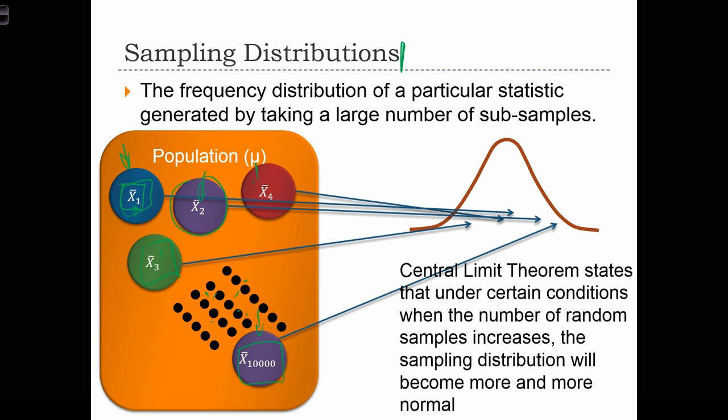The central limit theorem, a theory from mathematics, states that under certain conditions, when we increase the number of random samples taken, so from one sample to, say, 10,000 samples, the sampling distribution that we get when we plot these sample means will become more and more normal.